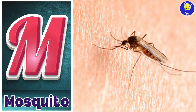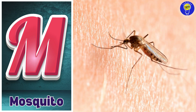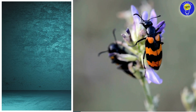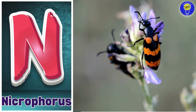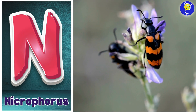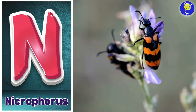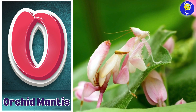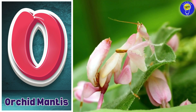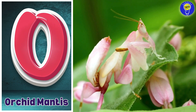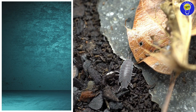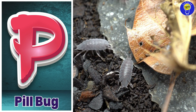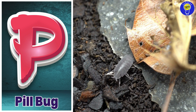M is for mosquito. N is for necrophores. O is for orchid mantis. P is for pill bug.